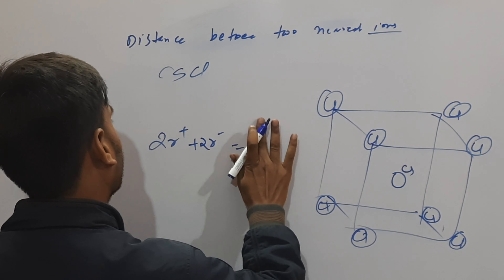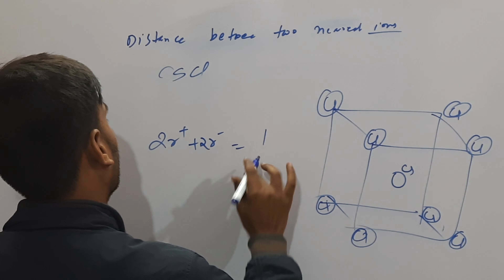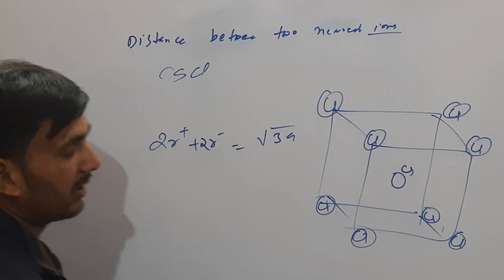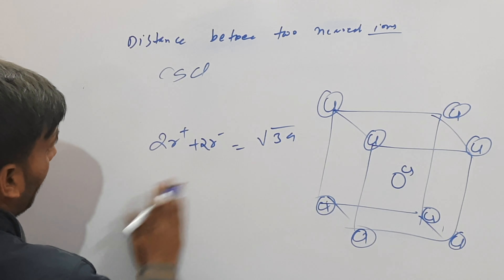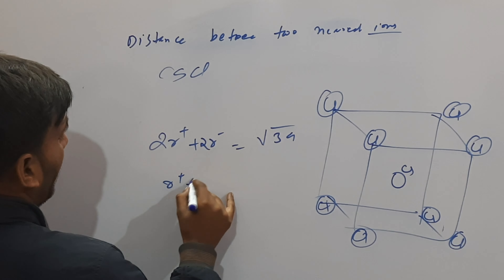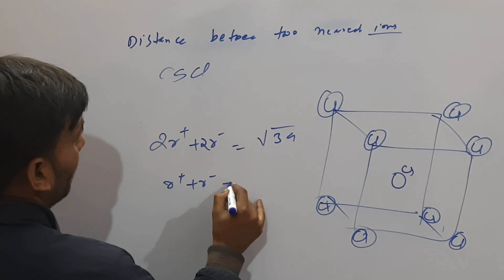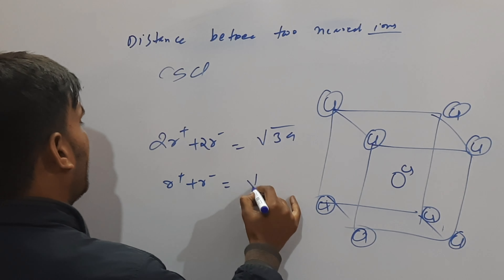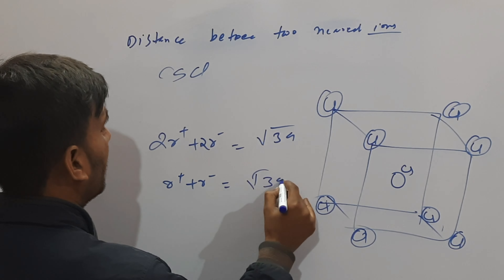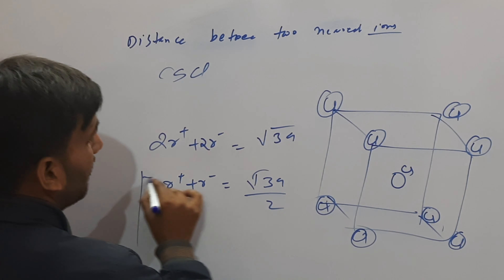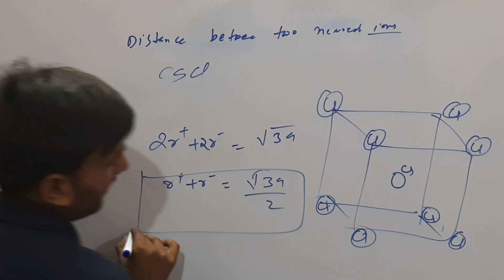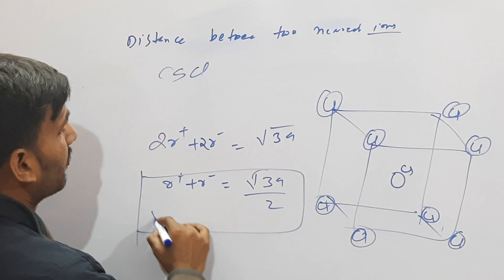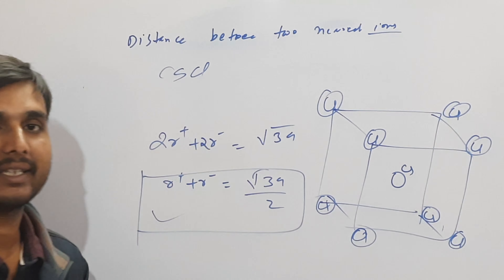CsCl type में 2R+ + 2R- equal to √3·A होगा। तो R+ और R- के बीच में distance होगा √3·A by 2. तो बहुत simple सा है, इसके भी कभी-कभी question पूछ दिया जाता है।